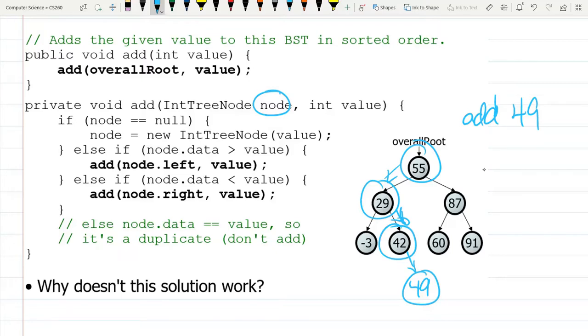But when we actually do this add, so let's see which one we had. If the data was less than a value, so the data was 42, the value is 49. So we don't just want to, so we're going to be doing this line of code. So we do want to add a node, but we need to make a new node here.